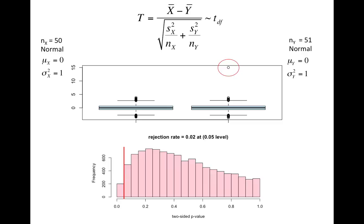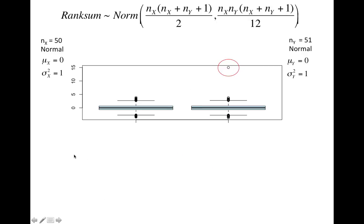That one outlier can really throw things off. So now my rejection rate is 0.02 instead of 0.05. This histogram is supposed to look uniform and it doesn't. I've thrown everything off based on using just that one outlier. Even though I use this test, it's supposed to be okay for unequal variances, which is what will look like is happening when I have this outlier here increasing the variance.